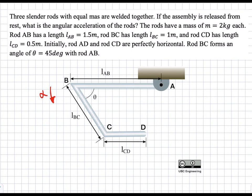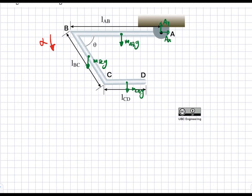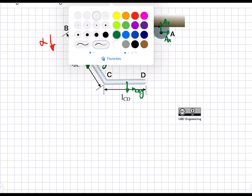The forces on this body are as follows. There's going to be a gravitational force downwards for each of the three slender rods — M_AB·G, M_BC·G, and M_CD·G — and then we have reaction forces at A. We're asked to find the initial alpha, so as always we're going to start with our free body diagram, detaching everything and redrawing the whole system with our forces.